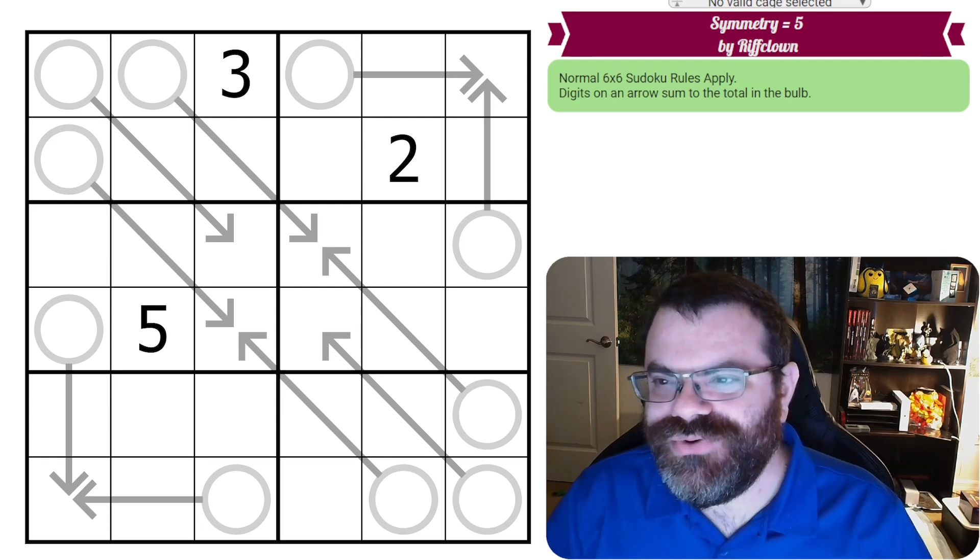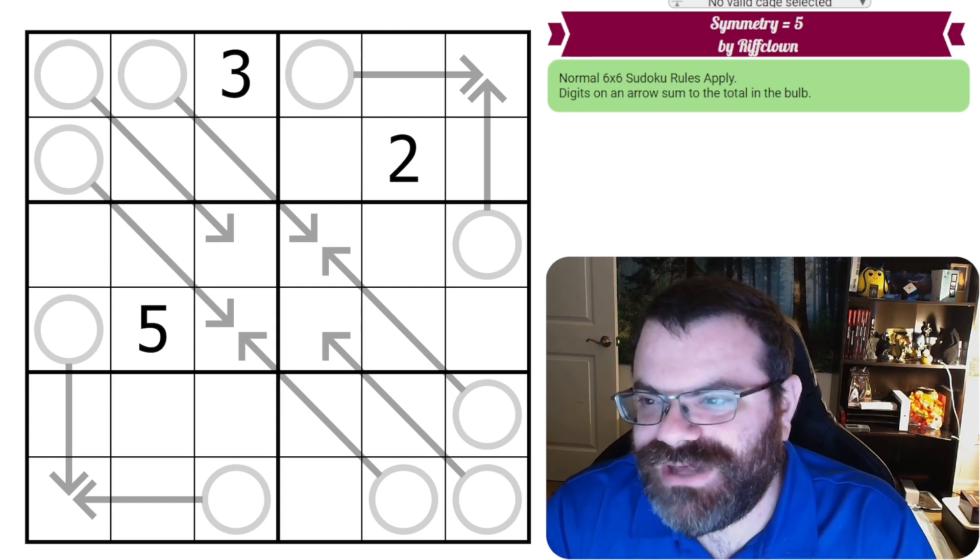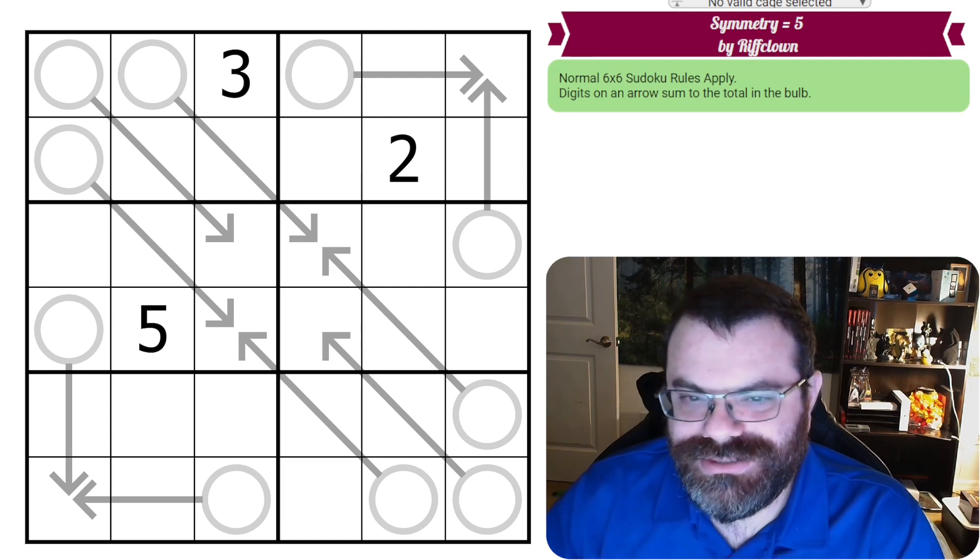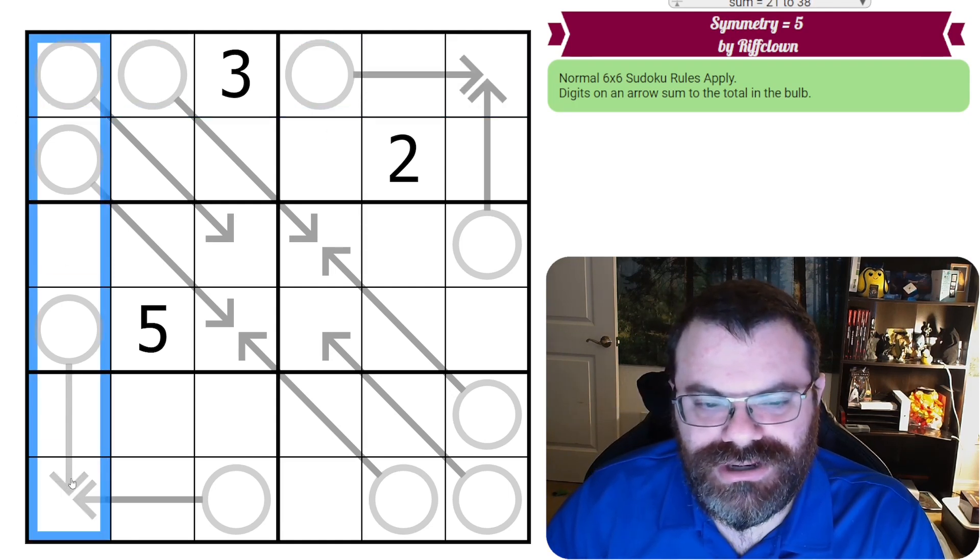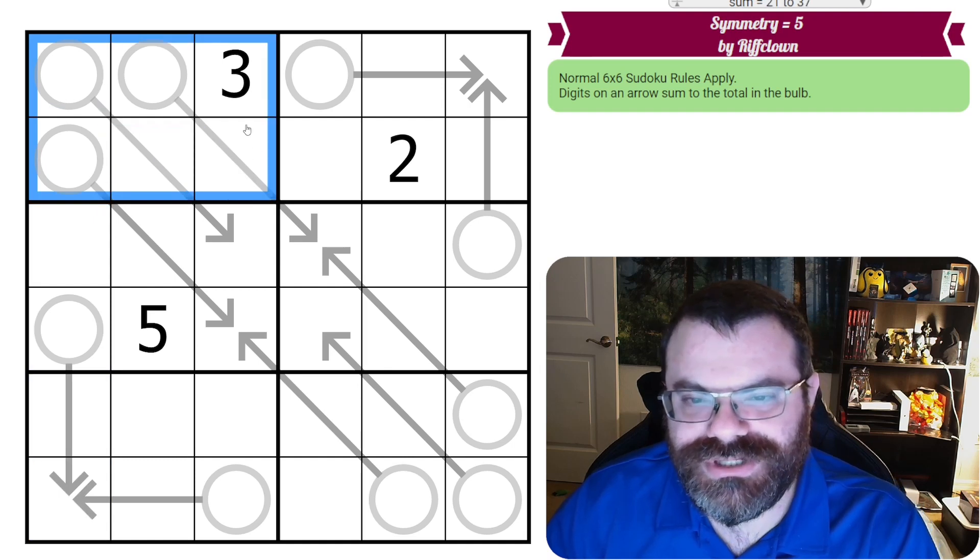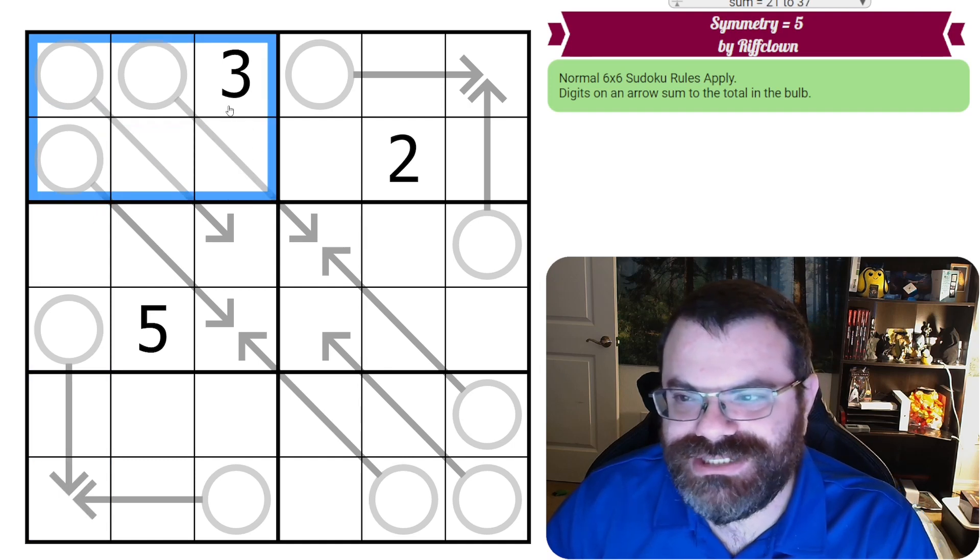Hello! Let's continue our Sudoku adventure with Symmetry equals 5 by RiffClown. So today we have normal Sudoku rules, so in every row, every column, and every 2x3 box, we're going to place the digits 1 to 6 exactly once each.